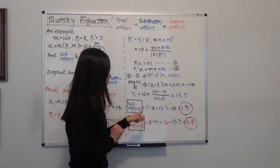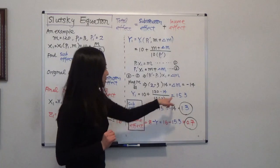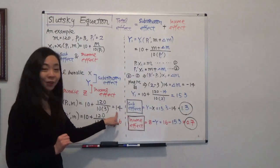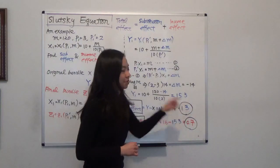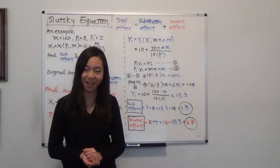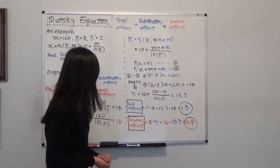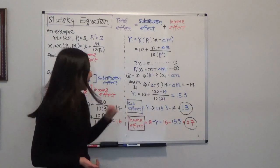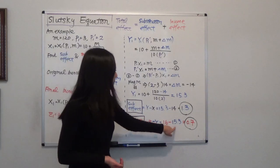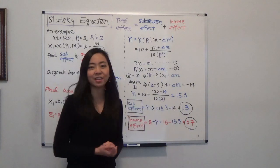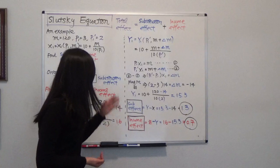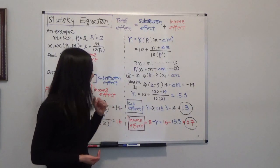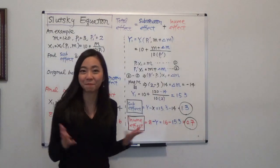The substitution effect equals Y minus X = 15.3 minus 14 = 1.3. The income effect equals Z minus Y = 16 minus 15.3 = 0.7. So we have calculated the substitution effect and income effect. I hope this helps — enjoy learning the Slutsky equation. Bye!